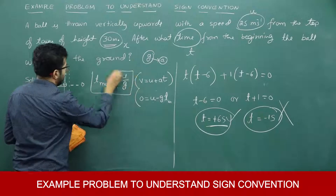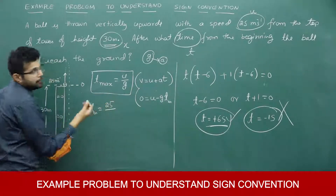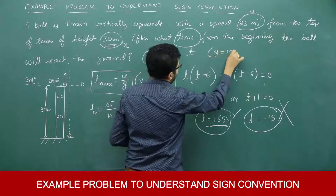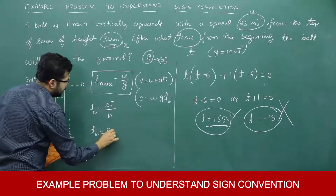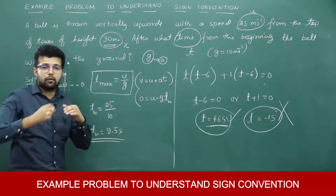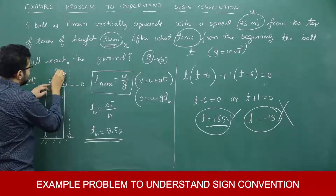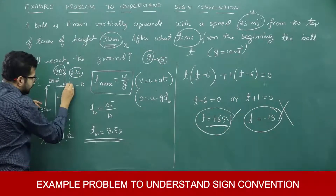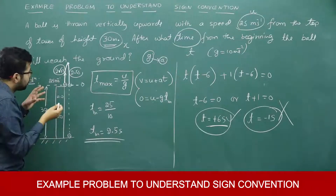So the ball takes 2.5 seconds to reach maximum height. By symmetry, the time required for the ball to reach the maximum height equals the time required to come back down. So in another 2.5 seconds the ball returns to the same height — the top of the tower. That is 2.5 seconds going up and 2.5 seconds coming back down, totalling 5 seconds.